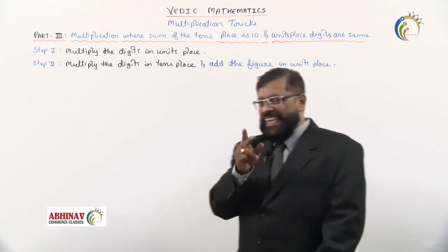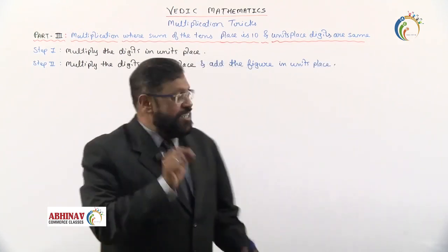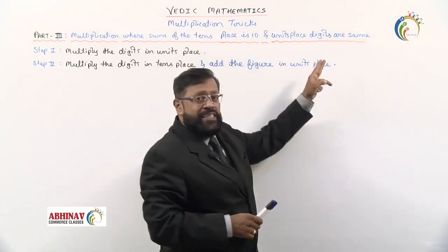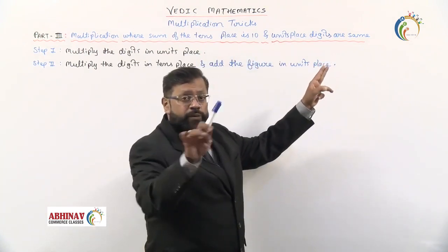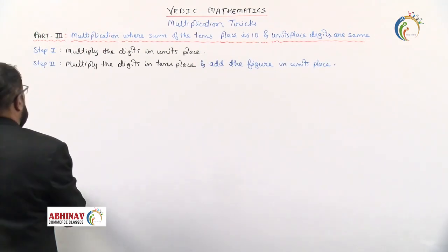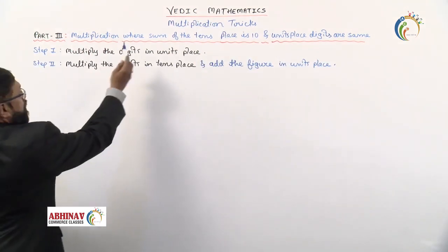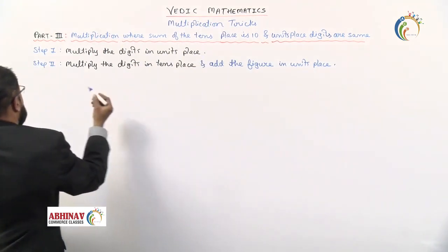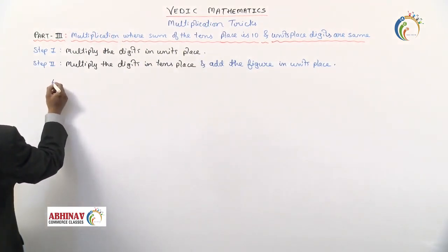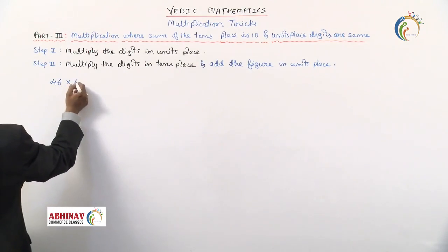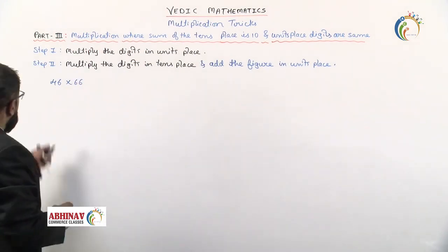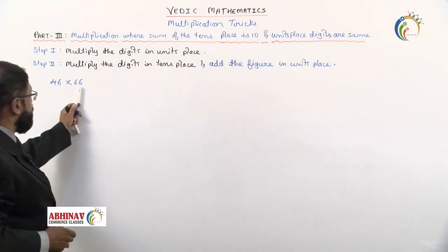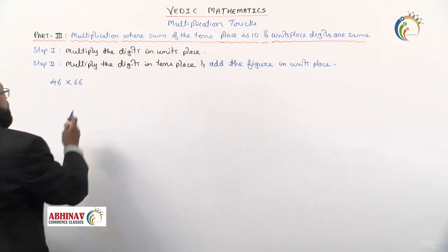See, it's interchanged. In the last it was units place sum is 10 and tens place digits are same. Here it is vice versa. The sum of the tens place is 10 and units place digits are same. For example, the number is 46 into 66. Here 4 and 6 tens place sum is 10, units is the same. Check out what is to be done here.